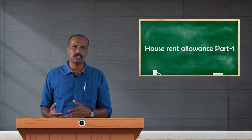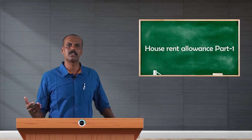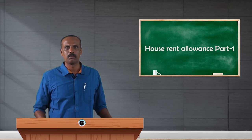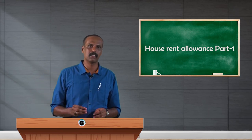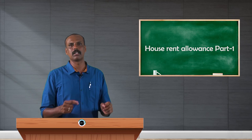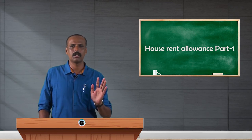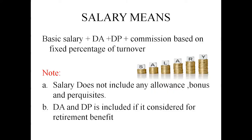Now, when we say 40 percent of salary, 50 percent of salary, or 10 percent of salary — what do we mean by salary for this purpose? In general, salary includes basic, DA, DP, commission, bonus, perquisites, and so on. But while calculating the exemption for HRA purposes, salary means only: basic pay, plus dearness allowance, plus dearness payment, plus commission based on a fixed percentage of turnover achieved by the employee. If the employee is not receiving dearness payment or commission, those should not be included.